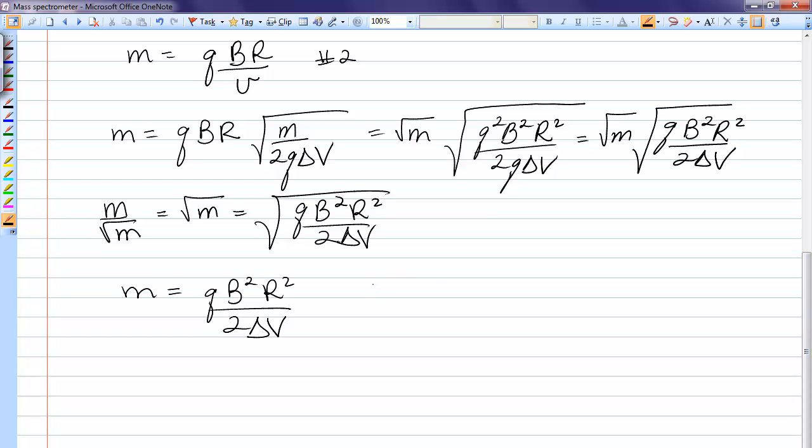So, I want to write this equation twice. I want to write it for m1 and for m2, and then divide. So, m2 over m1 will be all these quantities for particle 2, Q2, B is the same for both, R2.